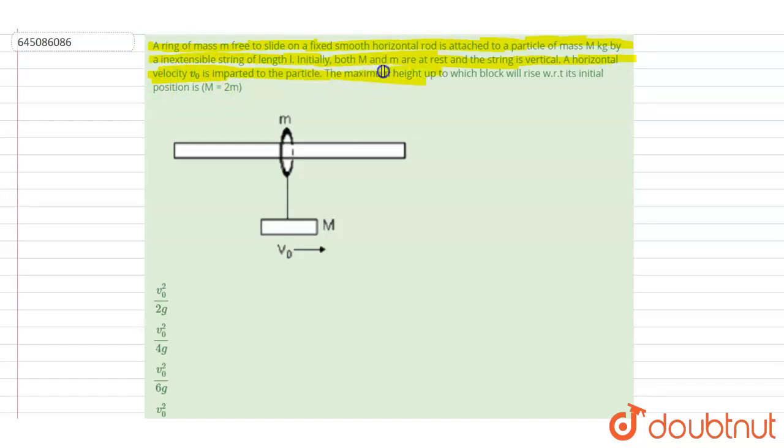is equal to 2 times small m. So if you see here, what will happen when it moves at an